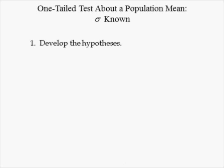Step 1 is to develop the hypothesis. Since the director wants to know if the service goal of 12 minutes or less is being achieved, the null hypothesis is that the population mean mu is less than or equal to 12 minutes.